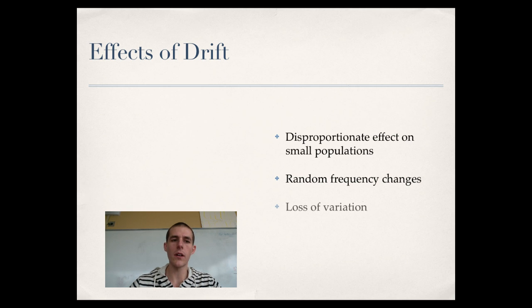Next up, I want to talk about the effects of genetic drift. These are some of the things that you see within small populations. First of all, it has a disproportionate effect on a small population. Foot steps on the beetles, takes out all the green ones, that's a disproportionate effect. There can be random frequency changes. If you've got a really big population, random mutations aren't going to have a big effect on the population as a whole, but if you've got a really small population, a random mutation could have a big effect on the allele frequencies. Also, you can have a loss of variation.